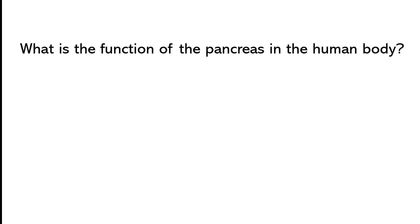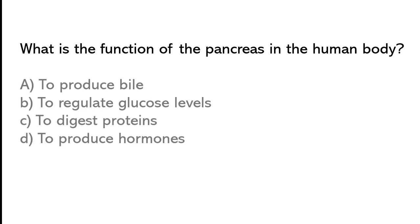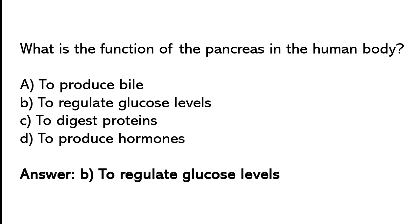What is the function of the pancreas in the human body? To produce bile, to regulate glucose levels, to digest proteins, to produce hormones. The correct answer is option B — the function of the pancreas in the human body is to regulate glucose levels.